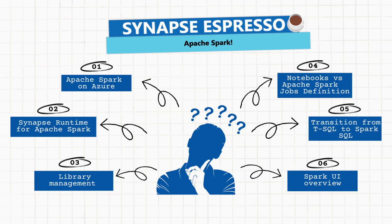The third episode will focus on adding and managing custom libraries, including a demo of how to do that per specific language. In our fourth episode, we'll compare notebooks and Apache Spark job definitions — because we get many questions and confusion about that, so we'll discuss when to use each one.